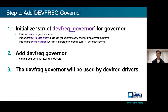To add a governor, first initialize the device frequency governor structure. The mandatory variables are: a name, get target frequency, and event handler functions. The get target frequency function must include the governor algorithm for deciding the next frequency — this is the key function you must develop. The event handler function manages the life cycle of the governor, handling events like governor start, stop, suspend, and resume. These two functions are mandatory. Once you implement them, you just add the governor and any device frequency driver can use it.